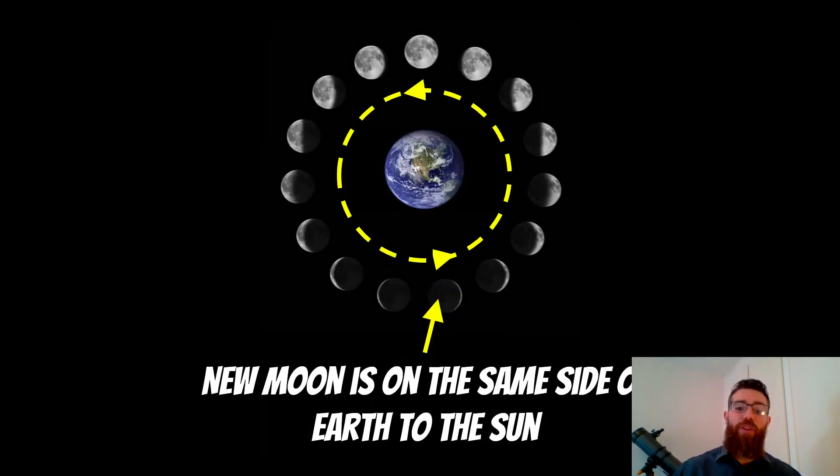A new moon is on the opposite side to where a full moon would occur. So this has to be on the same side as earth as to where the Sun is. You might see the moon during the day in those particular times.